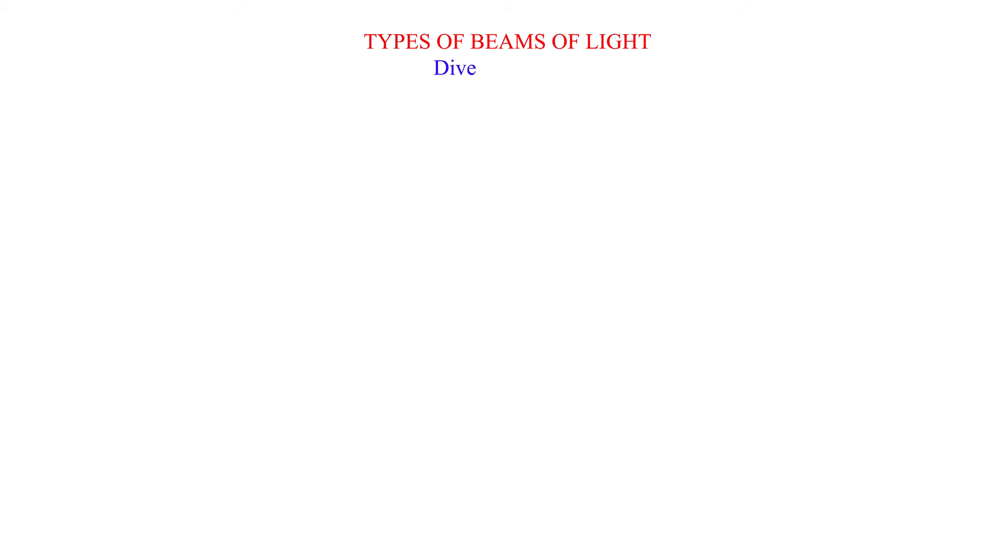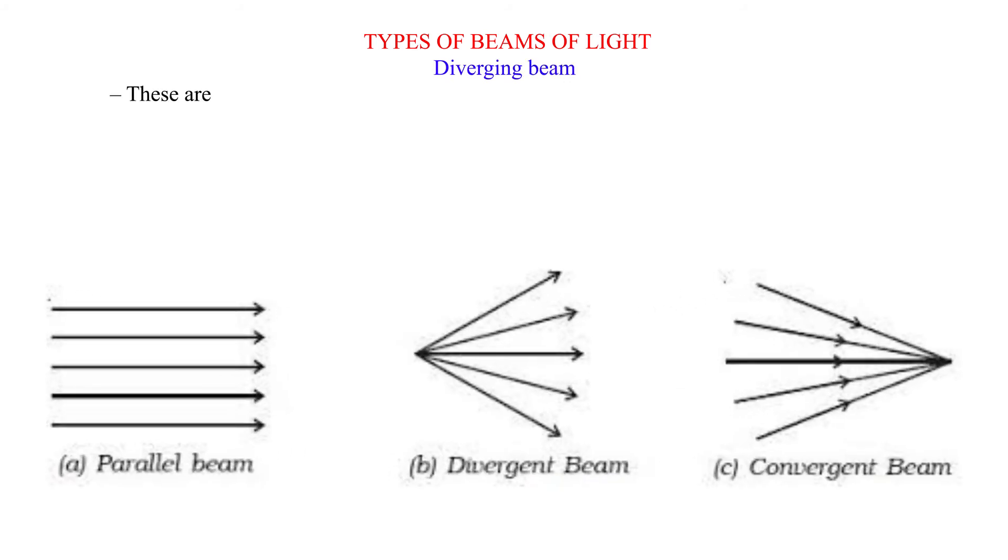Types of Beams of Light. Diverging Beam: These are beams of light that appear to spread out (diverge), for example, light from a spotlight.